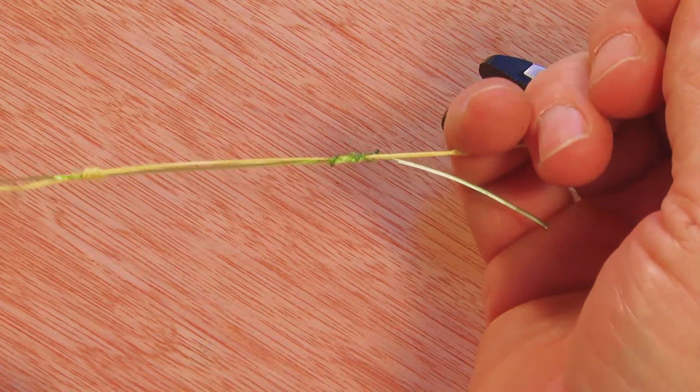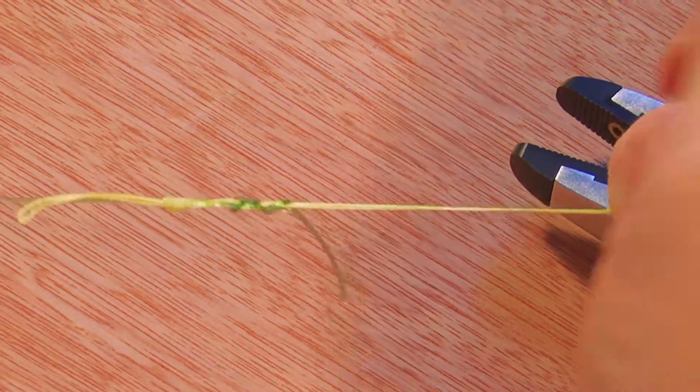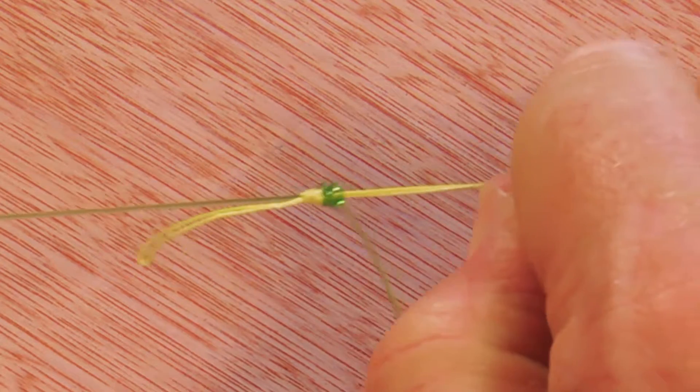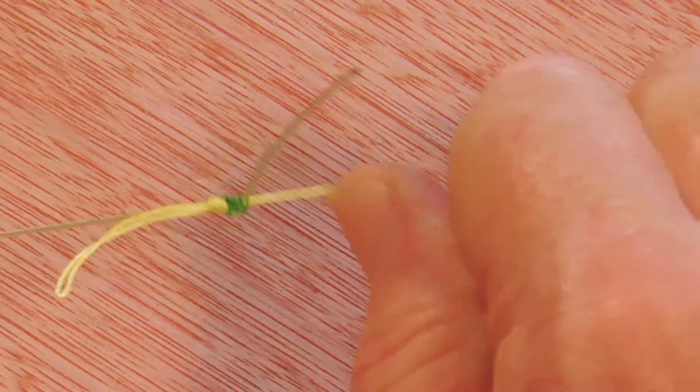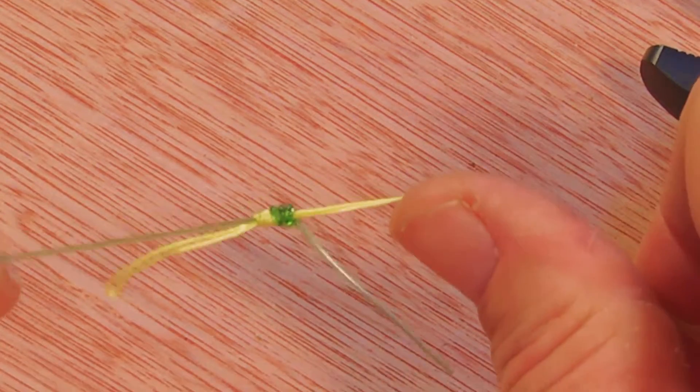Now, the two lines, just like with a standard Uni-to-Uni knot, will cinch together. And the resultant knots on either side of each other are about the same size.